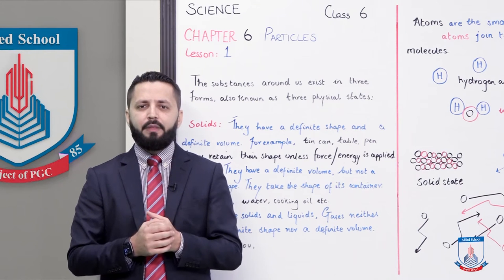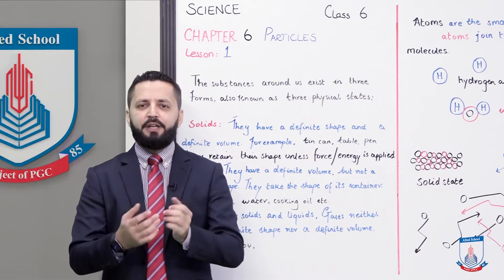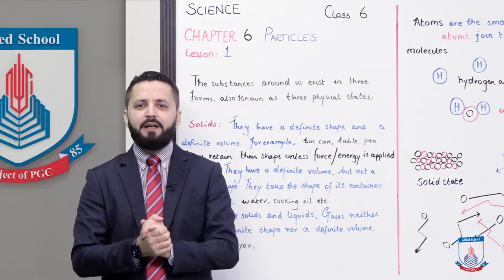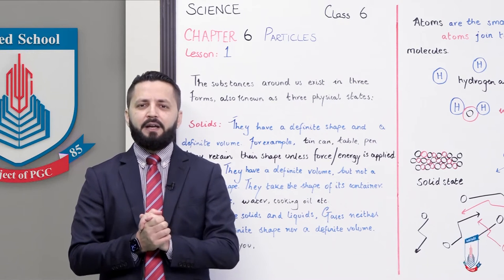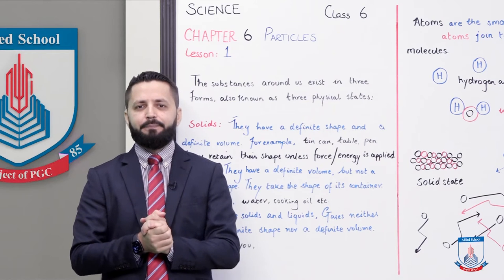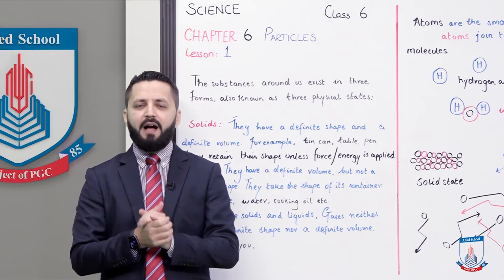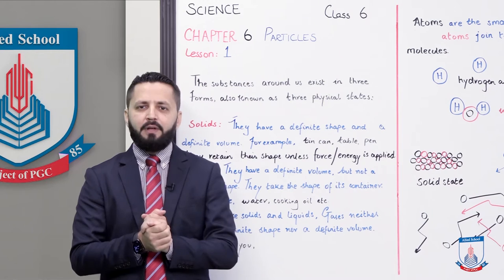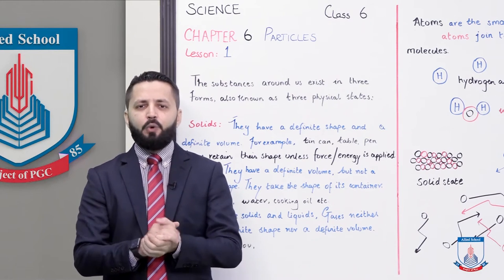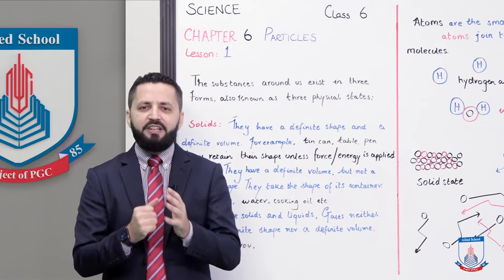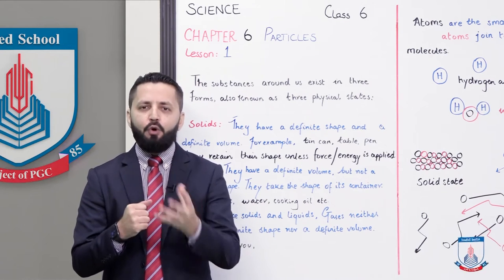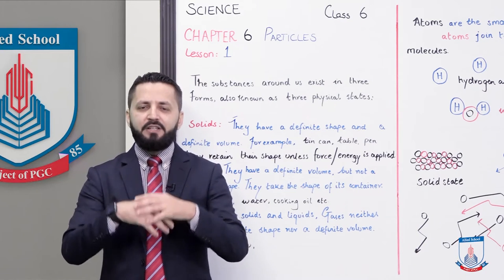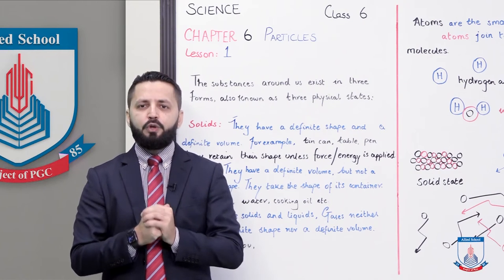For example, a tin can — if you press it, its shape will change. You applied a force and the shape changed. But still, the tin can remains a tin can; only its shape changes. It comes back to having a definite shape and definite volume. Stepping on the can does not change its volume, only its shape — and even then it still follows the rules of existing as a solid.